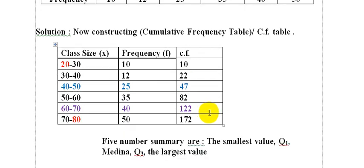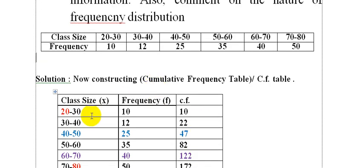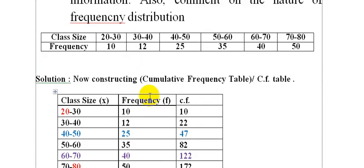Now we are setting up the table with class size X, frequency F, and cumulative frequency CF. The class intervals are: 20-30, 30-40, 40-50, 50-60, 60-70, and 70-80. This gives us the frequency of each class.